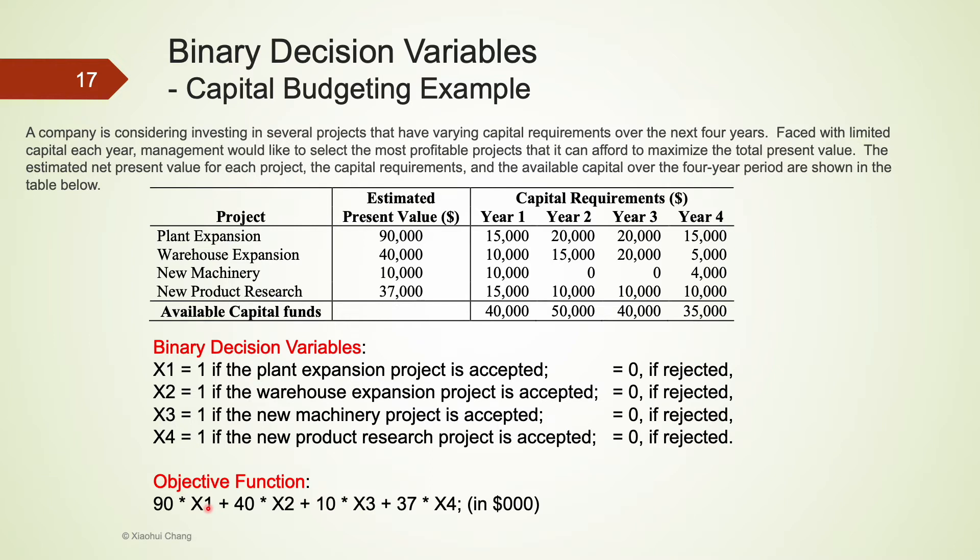Taking the last project, new product research as another example. If x4 is 1, meaning that we accept this project, then the total present value should go up by $37,000. If x4 is 0, meaning that we reject this project, the total present value should go up by 0. We sum up all of these present values for these four projects together, and use this as our objective function. Our goal here is to maximize this objective function.